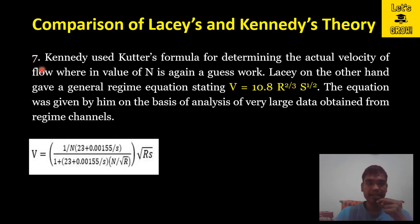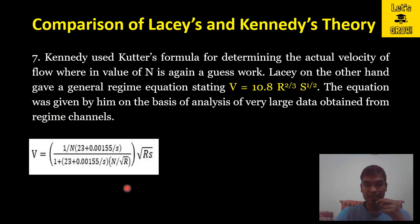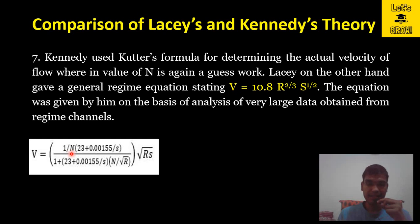Point seven: Kennedy used Kutter's formula for determining the actual velocity of flow, where the value of n is again a guesswork. While designing the canal using Kennedy's theory, the n value is used as a constant, but no provision or tabulation was provided by Kennedy for what value of n corresponds to a particular grain size — whenever using this formula, you have to guess the value of n.